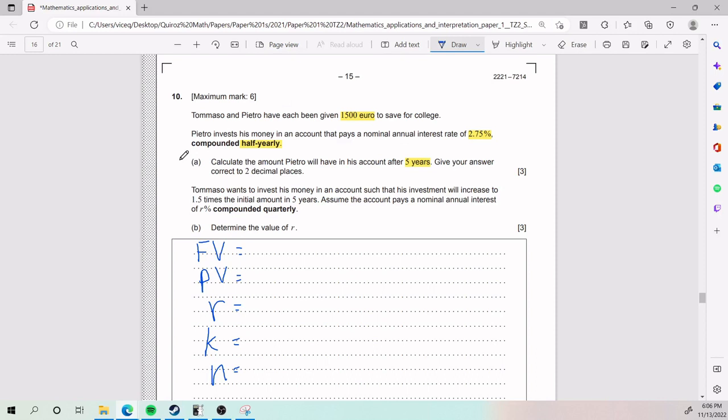In this case, they are asking us in part A to calculate the amount Pietro will have in his account after five years. If it's after five years, we're talking about an amount that's going to come later. That means our future value is exactly what we're trying to find. So FV is going to be X, our variable we're trying to find. Present value is how much money he puts in the beginning. They were given 1,500 euros. R is going to be in percent. They tell us it's 2.75. I just leave it like that.